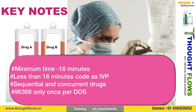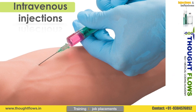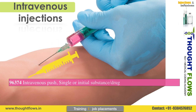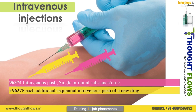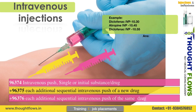The concurrent infusion service date is one day. We will also code the $0 value. IV push is a therapeutic, prophylactic, or diagnostic drug administration. The first drug IV push code is 96374. The second or subsequent drug IV push code is 96375. Remember, 96375 is used for each additional sequential IV push drug.